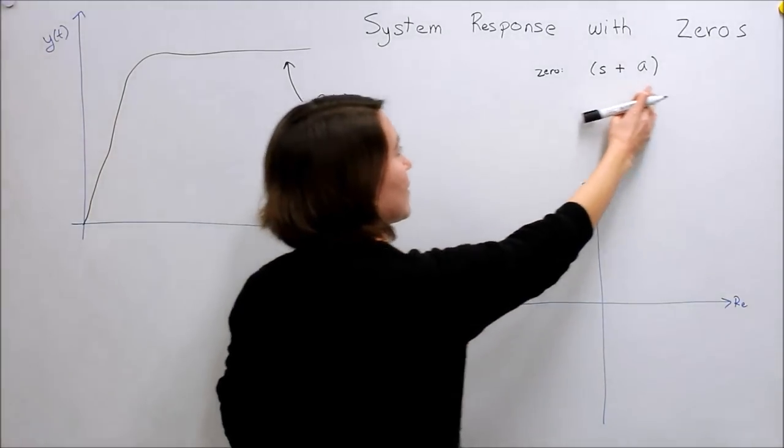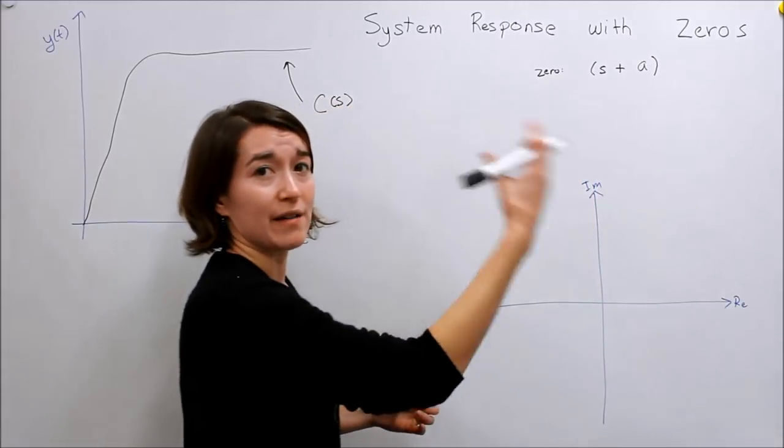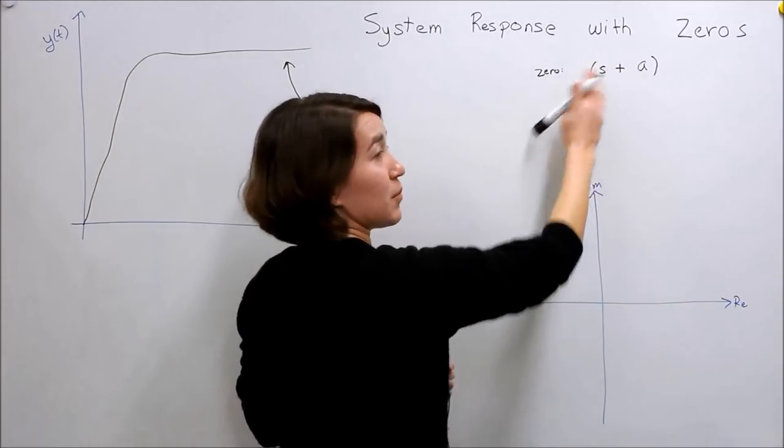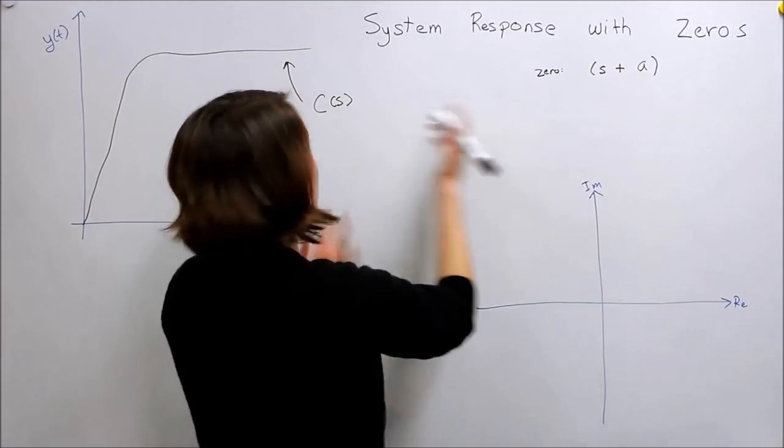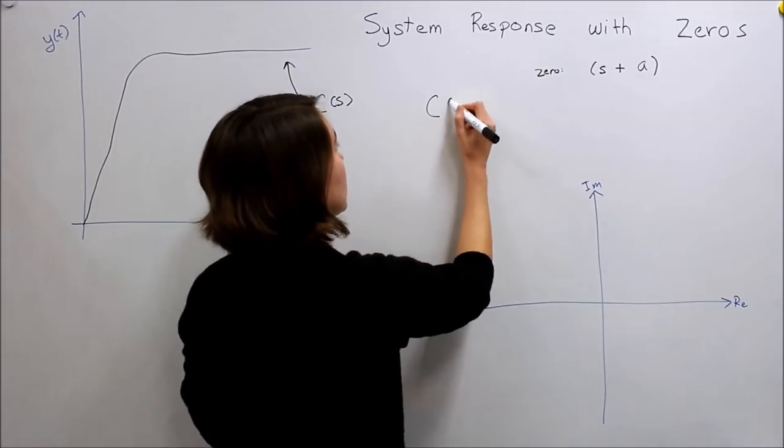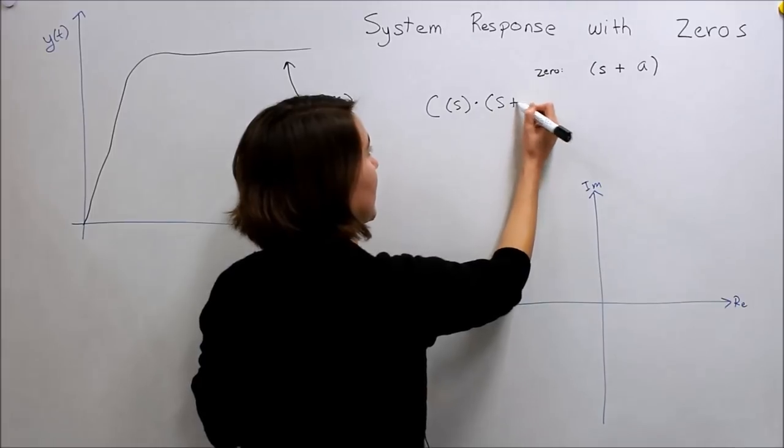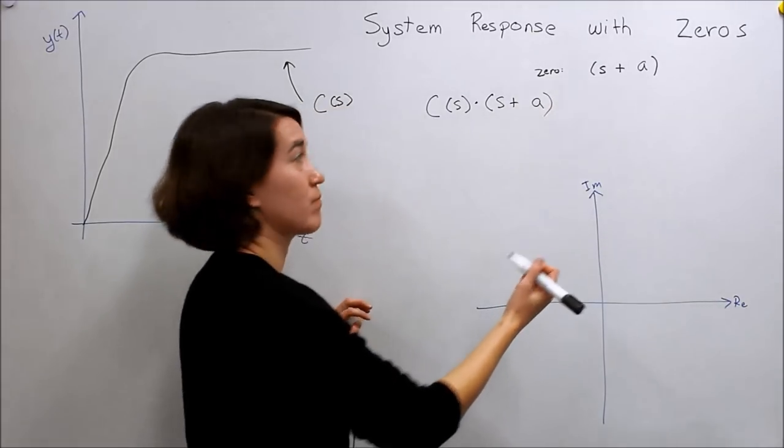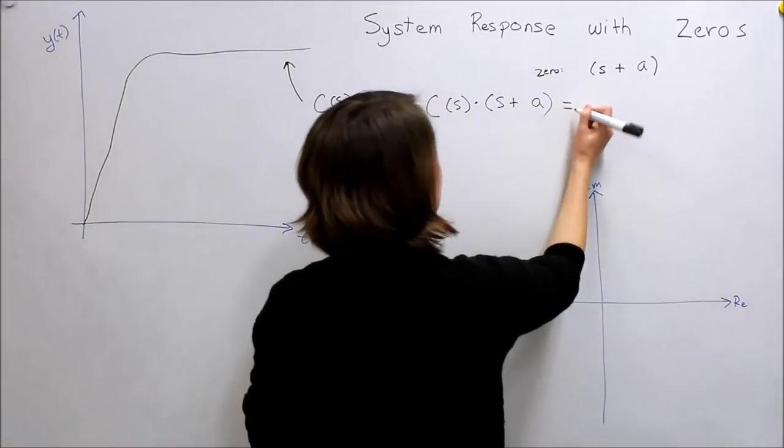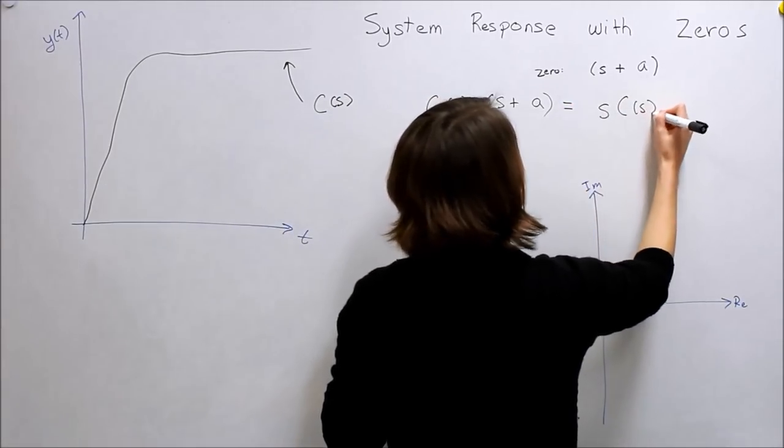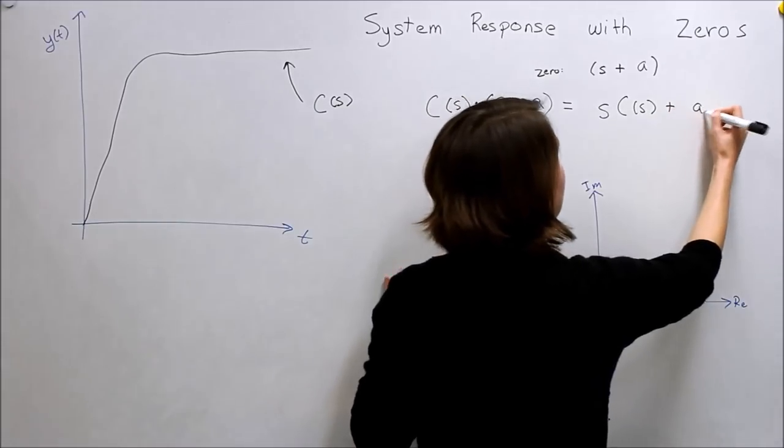So if this is our zero, we want to add a zero at negative a here, right, so the zero here would be negative a, then all we have to do is multiply these together. So our new system with a zero would be C of S multiplied by S plus A. Okay, so that would give us S times C(s) plus A times C(s).